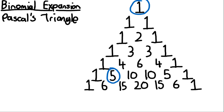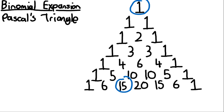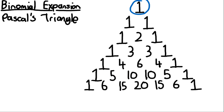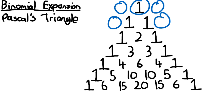Another example is the five, which is made up of the two values directly above it — one and four — and one plus four gives five. Another example is the 15, which is made up of the five and the ten directly above it added together. It starts from the one at the top and we treat all blank values as zero, which creates Pascal's triangle.